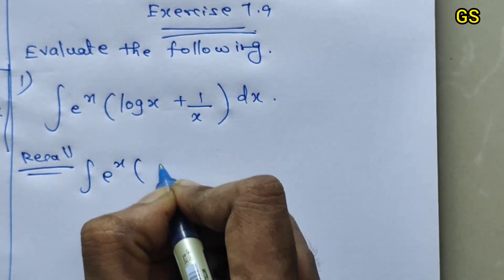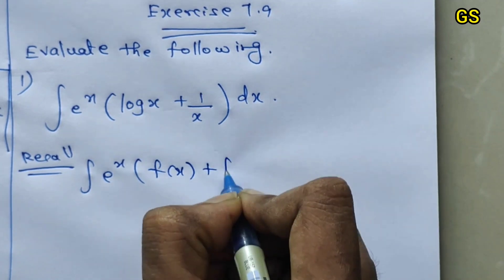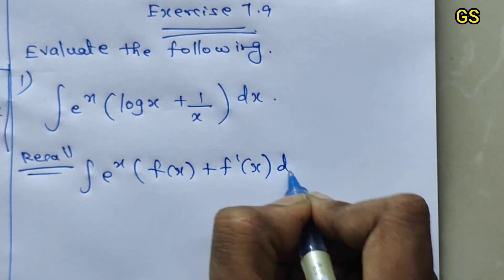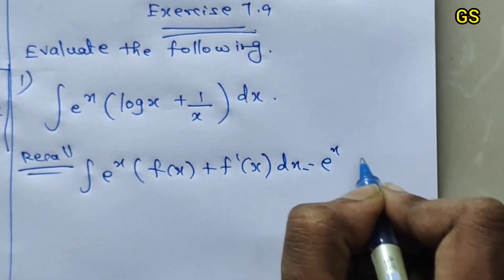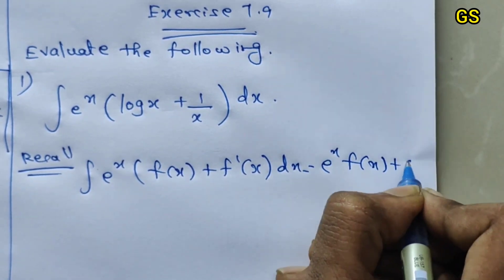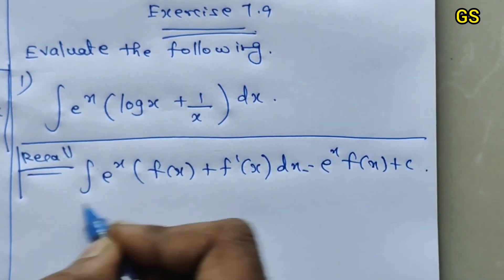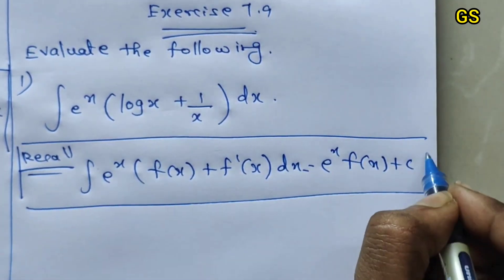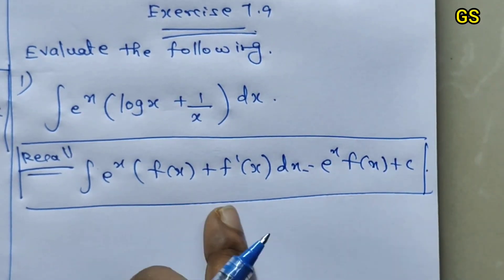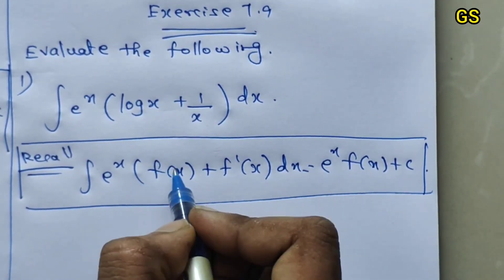The integration formula: integral of e power x into [f(x) plus f dash of x] dx equals e power x into f(x) plus C. So, integral of e power x [f(x) plus f dash of x] dx equals e power x into f(x).